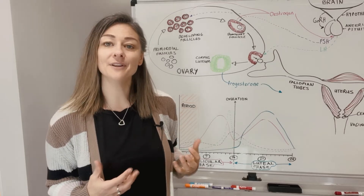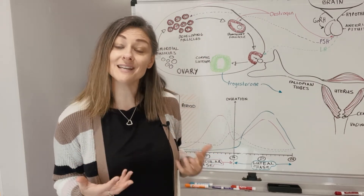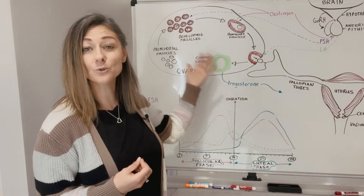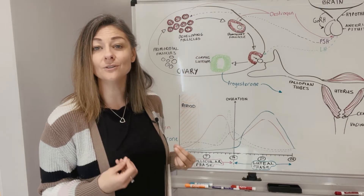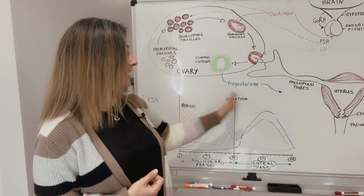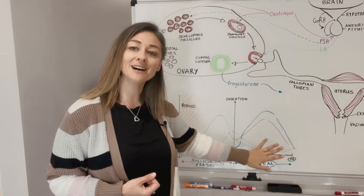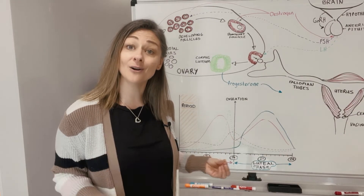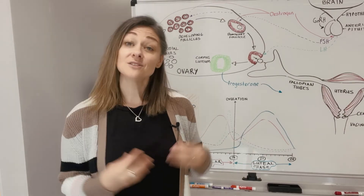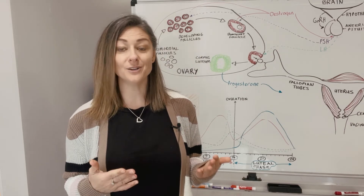If pregnancy does happen, the fertilized egg travels down the fallopian tubes into the uterus to be implanted, where it starts making the pregnancy hormone HCG. This signals back to the corpus luteum, which continues to make progesterone and sustain the lining of the uterus. What's important to know is that after ovulation, your chances of conceiving in the second half of your cycle are gone — remember, the egg only lasts for 24 hours. So in this video I'm going to help you identify the signs your body shows when you are about to ovulate.